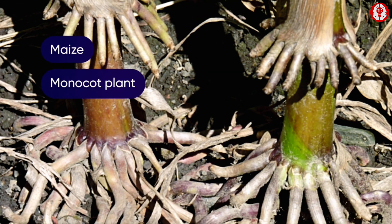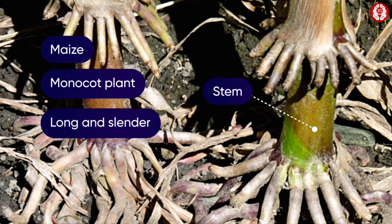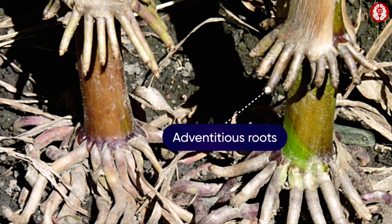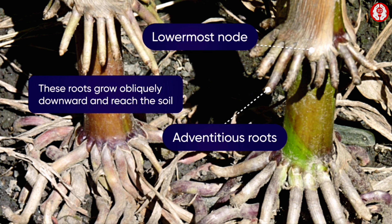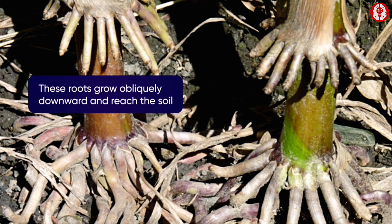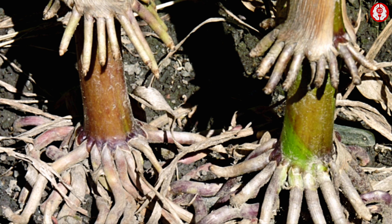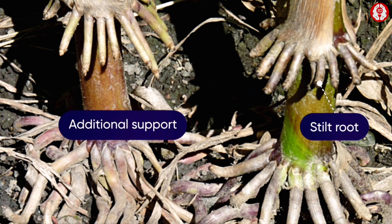Maize is a monocot plant having a long and slender stem. Several adventitious roots arise from the lowermost node, which run obliquely downwards and produce a fibrous root system in the soil. These roots, known as stilt roots, render additional support to the plant and prevent it from being uprooted.